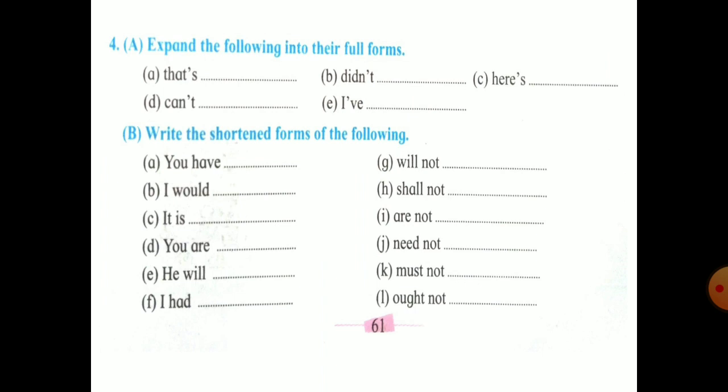Question number four: expand the following into their full forms. Here we have short forms so we have to write full forms. First, that's, second didn't, then here is cannot, and then I have. For part B, write the shortened forms of the following. First we have to write shortened forms. Here we have the not words, this is called contracted forms. You have, I would, it is, and the remaining ones we have to write. He will is different, so you are, he will. The root word is the full word and the helping word is the half portion after the apostrophe.